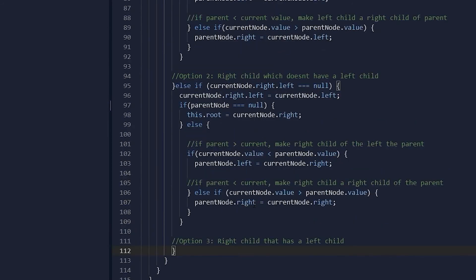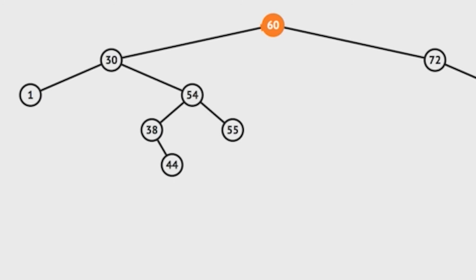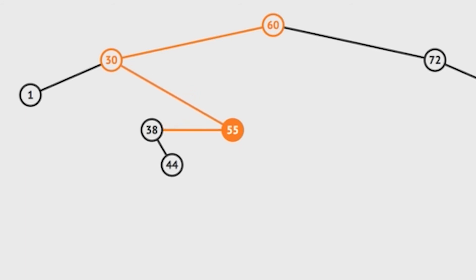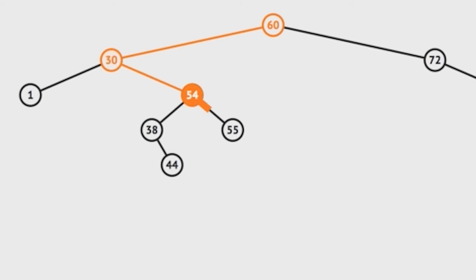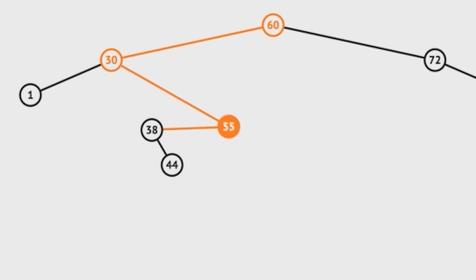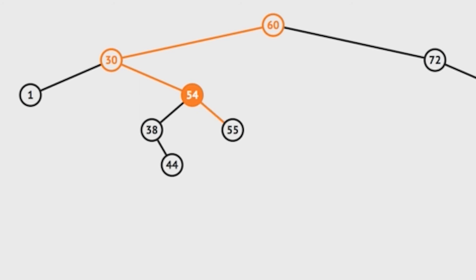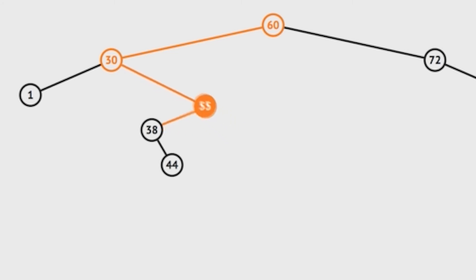The next condition arises when the node to delete has a right child, but that right child has no left child. In this case, the left child of the current node fills the empty left slot on the right child. This moves the nodes into place, allowing the right child — with its newly moved left child — to slot into the parent node on either the right or left side depending on its value, which also depends on which side the former current node was on.